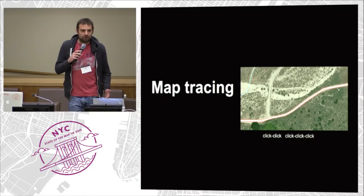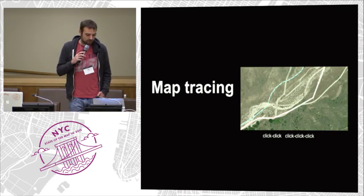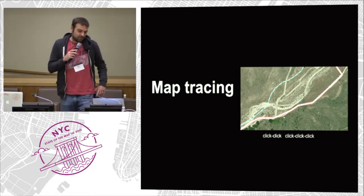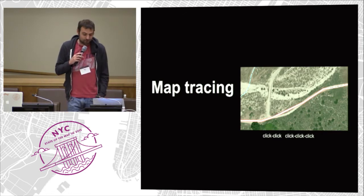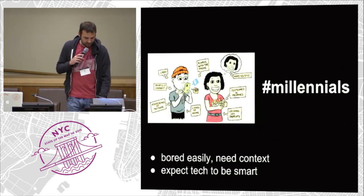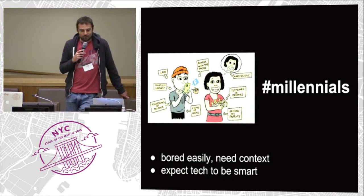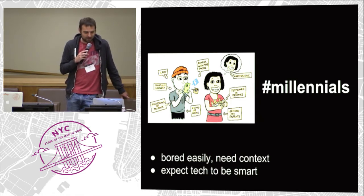The first part is map tracing. The way I define that is you're kind of like an armchair mapper — you trace over some sort of base layer, usually satellite imagery. And if you're trying to do roads, it's usually a really tedious process with a lot of clicking.